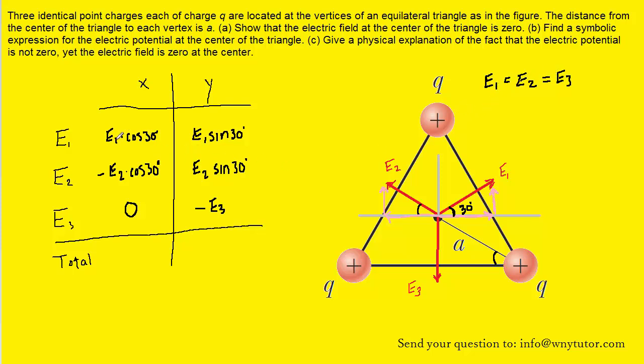So now, we can actually come back in here and erase the subscripts 1 and 2 because the magnitudes are all the same. And when we add the x components, we can see that the positive and negative E cosine 30, they will cancel. So this ends up being 0.